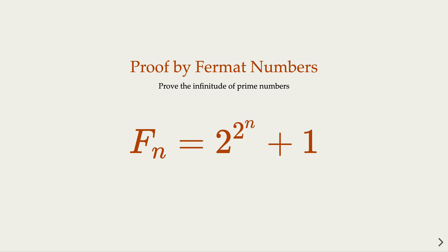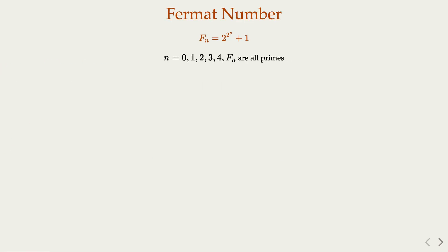Now this is in the form of 2 to the 2 to the nth power plus 1. Notice that when Fermat first constructed this, when n equals 0, 1, 2, 3, 4, they are all prime numbers. But when n is bigger than that, notice that the number gets big really fast.